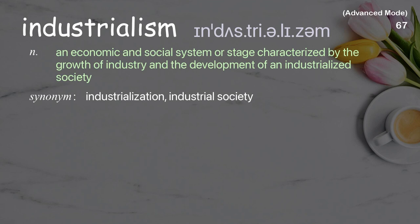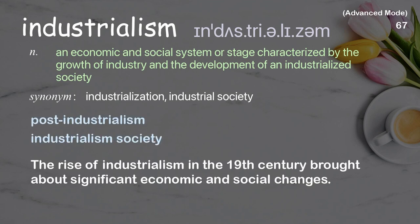Industrialism: An economic and social system or stage characterized by the growth of industry and the development of an industrialized society. Examples: Post-industrialism. Industrialism society. The rise of industrialism in the 19th century brought about significant economic and social changes.